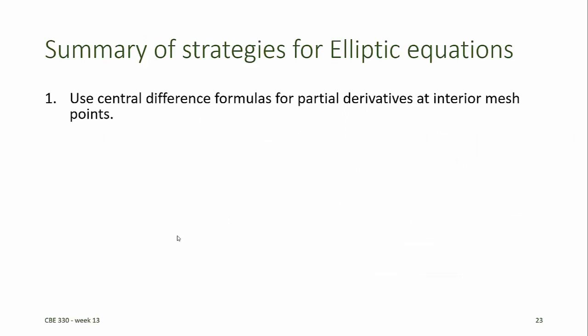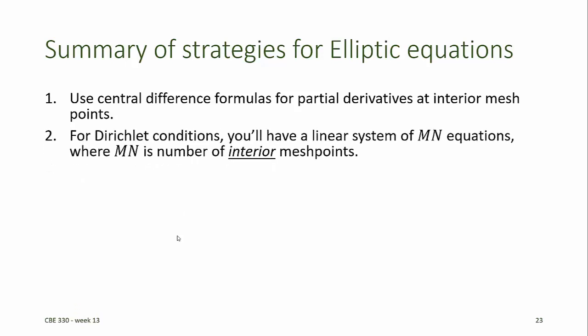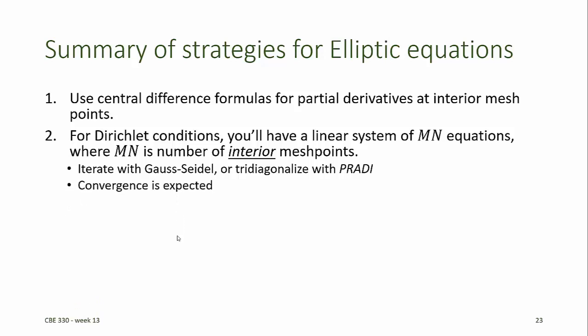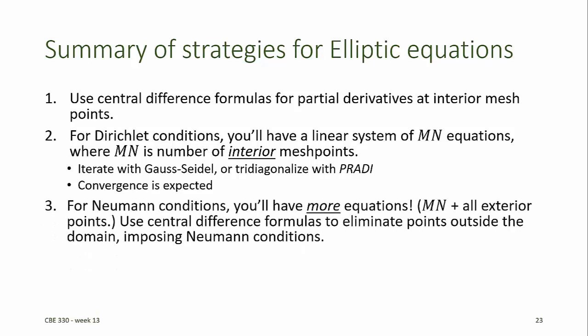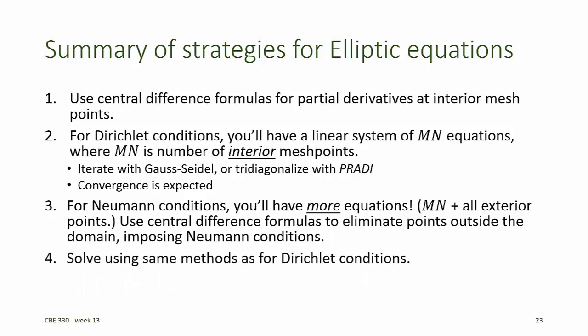When solving elliptic partial differential equations, we use central difference formulas for the partial derivatives at each of the interior mesh points. For the Dirichlet conditions, we'll have a linear system of m times n equations, where m times n is the number of interior mesh points. We can iterate with the Gauss-Seidel method, or we can write two tridiagonal systems and solve using the ADI method, which is also iterative. If we have Neumann conditions, then we have more equations — m times n plus all of the exterior mesh points. So we write central difference formulas to eliminate points outside of the domain when imposing the Neumann boundary conditions, and then we solve using the same methods as for Dirichlet conditions.